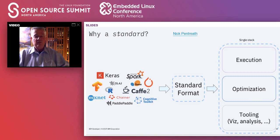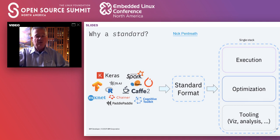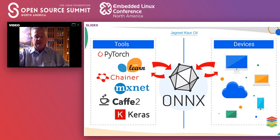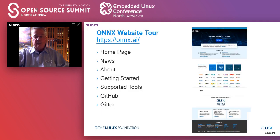By having ONNX as a standard interchange format, this allows inference to be optimized and all of the different tools to interoperate. When you get a copy of these slides, you can see hyperlinks that take you out to additional information about ONNX. This slide from Nick Pantry and another from Jigreek Cargill both show the different tools that are out there. ONNX is an interchange format, and we'll get into it in just a little bit more depth shortly.